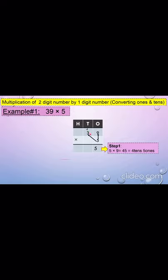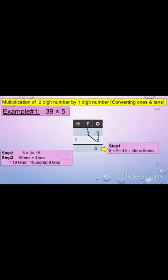Step 2: we have to multiply 5 and 3. 5 multiplied by 3 equals to 15 tens. Step 3: we have to add 15 tens and 4 tens. 15 plus 4 equals to 19 tens, and 19 tens equals to 1 hundred and 9 tens. So 9 will come in the tens column and 1 will come in the hundreds column. The product of 39 and 5 is 195.